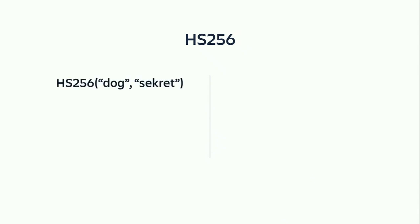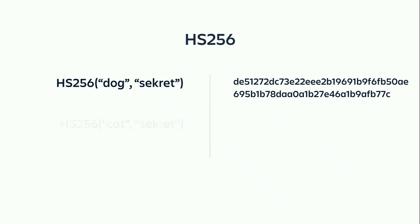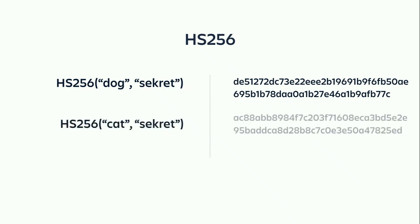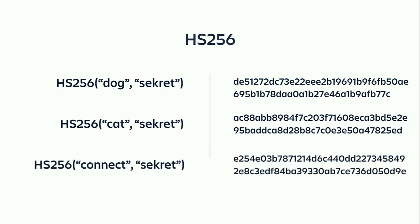Let's look at something designed by someone far smarter than I am: HS256. You might have remembered seeing this in the algorithm header of the JWT. It's not just a normal hash function — it also takes in a secret key. If you hash 'dog' with the secret key 'secret', you'll get a specific output. Similarly, 'cat' with the same shared secret becomes another output, and 'connect' will become something like yet another. Given that output, you cannot figure out what the input was — it's impossible. Trust math. I also can't find a different combination of input and shared secret that generates the same output. It's practically impossible.